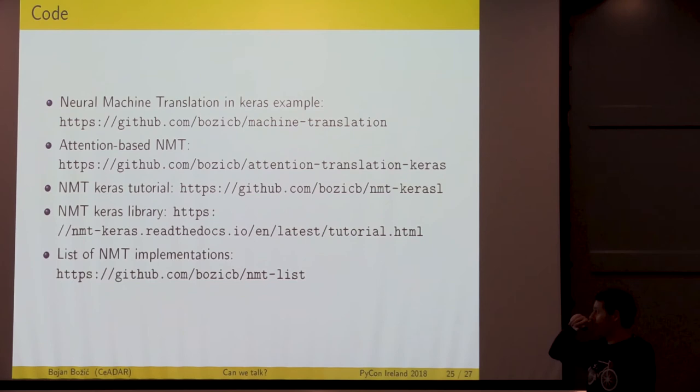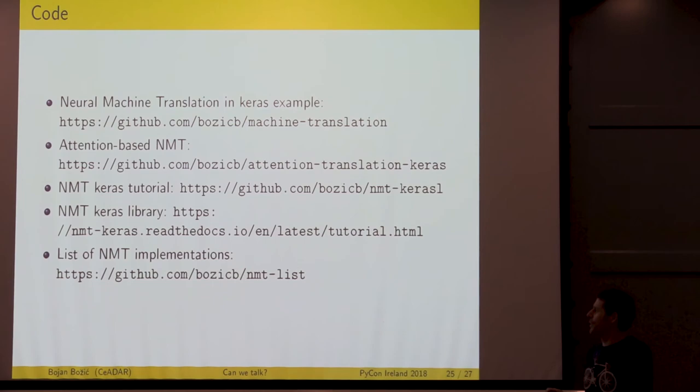I have added quite a bit of code examples here. I have the implementation of neural machine translation in Keras that I showed you on GitHub. There is also an implementation of an attention-based neural machine translation model, the state-of-the-art thing I talked about before. There is a neural machine translation Keras tutorial worth looking at, documentations of neural machine translation Keras libraries, and a very nice list of neural machine translation implementations on GitHub.